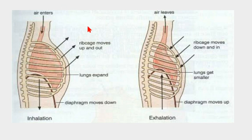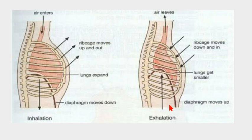As a result of the increased volume, pressure in the lungs decreases and air enters from outside, since air moves from high pressure to low pressure. During exhalation, the rib cage moves downward and inward, the diaphragm relaxes and becomes dome-shaped again, moving upward. The lungs get smaller, so pressure increases and air is forced out of the lungs.